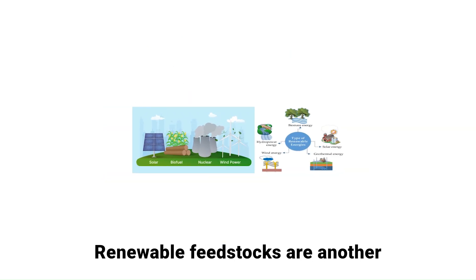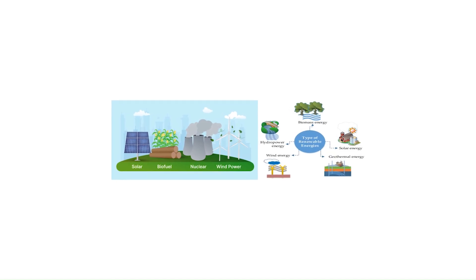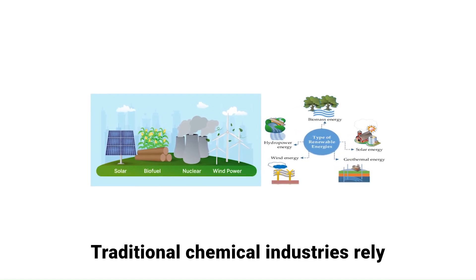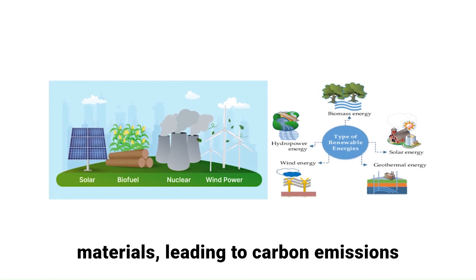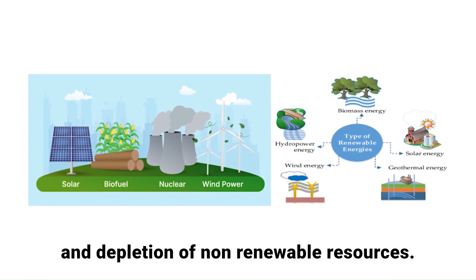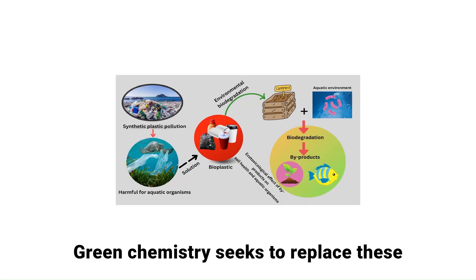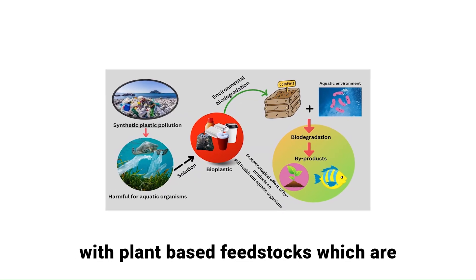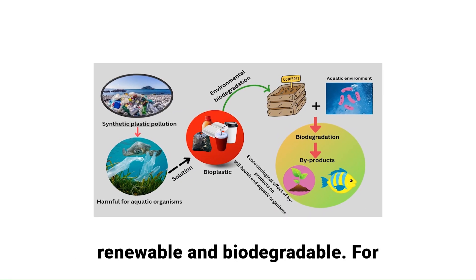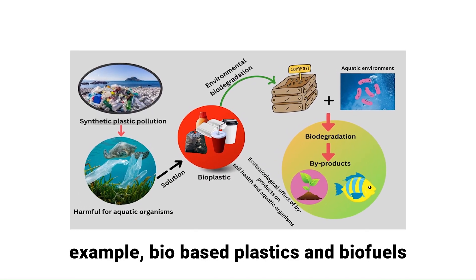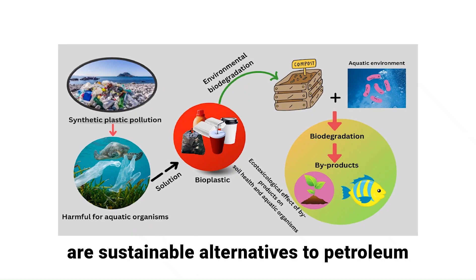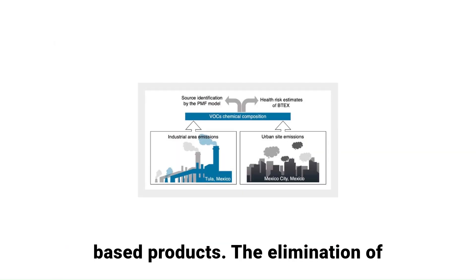Renewable feedstocks are another important part of green chemistry. Traditional chemical industries rely heavily on fossil fuels for raw materials, leading to carbon emissions and depletion of non-renewable resources. Green chemistry seeks to replace these with plant-based feedstocks, which are renewable and biodegradable. For example, bio-based plastics and biofuels are sustainable alternatives to petroleum-based products.